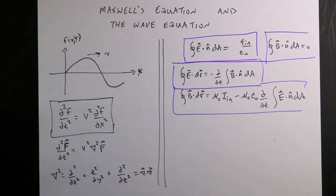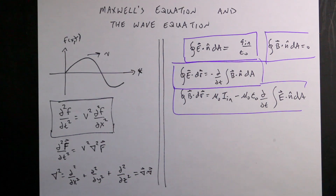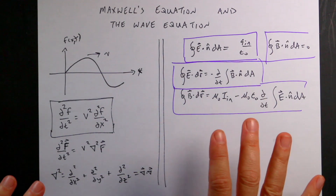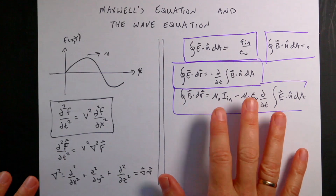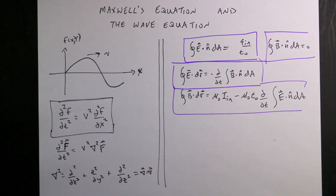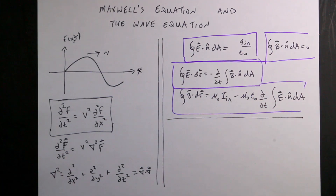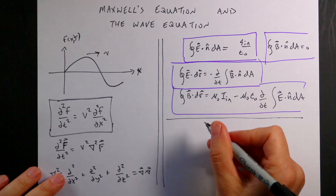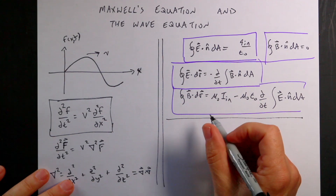Those integral forms aren't super useful in this case. What we want to do is use Stokes' theorem and the divergence theorem to change these integral forms into differential form. I do have a video on that derivation, but let's write down Maxwell's equations in differential form.